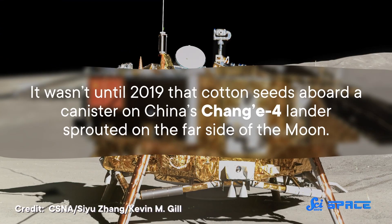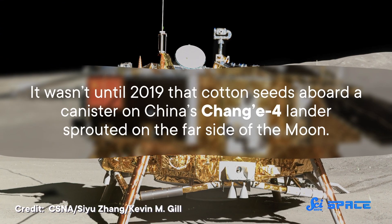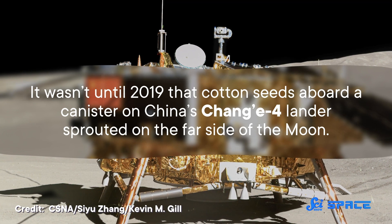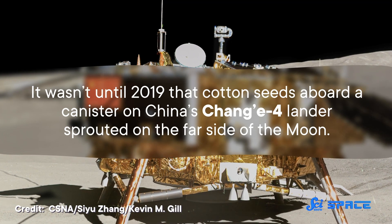Now, growing plants onboard a high-tech space station is one thing, but growing them on the surface of the Moon or a planet is another. It wasn't until 2019 that cotton seeds, aboard a canister on China's Chang'e-4 lander, sprouted on the far side of the Moon.